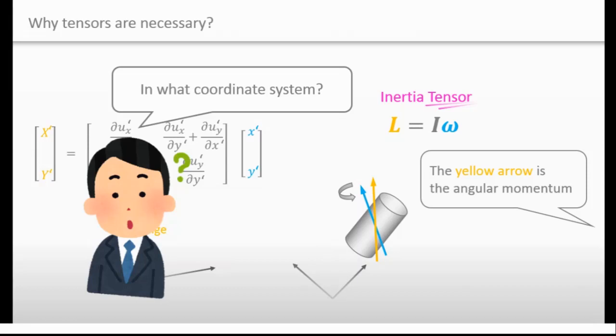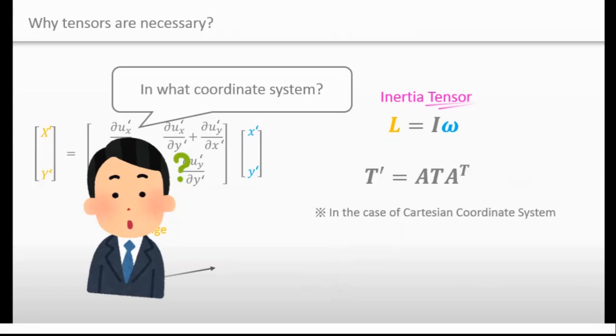Now, you may have a question. How can we come to know whether the matrix is a tensor or not? Here is the answer. This A is a coordinate transformation matrix. And if the components of this matrix changes in this way, this matrix is qualified to be a tensor.